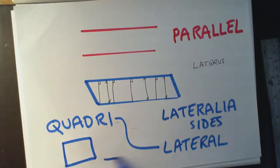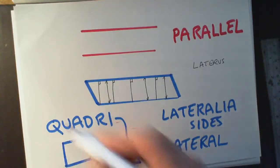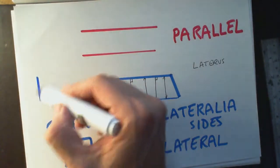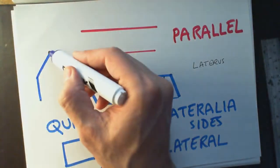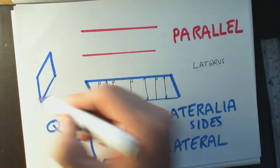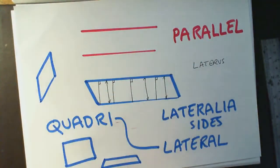So we get this word 'quadrilateral'. A quadrilateral has got four sides — one, two, three, four. It can be any shape, as long as it has four sides.